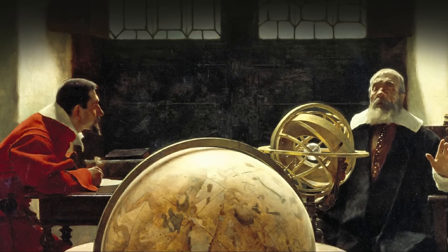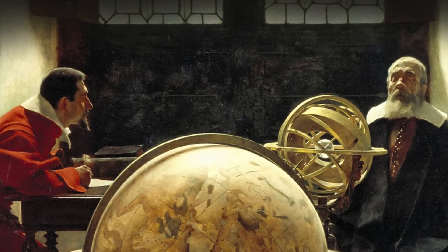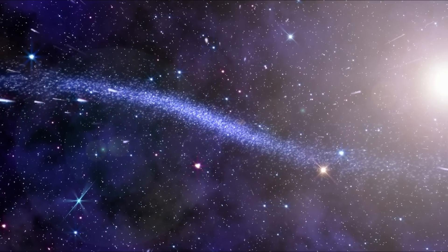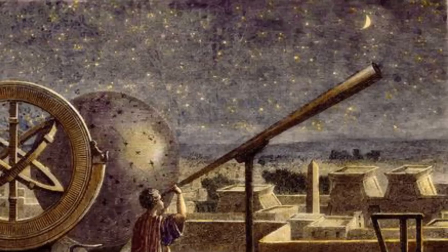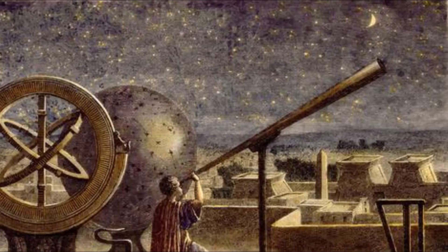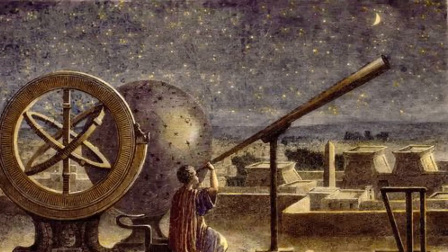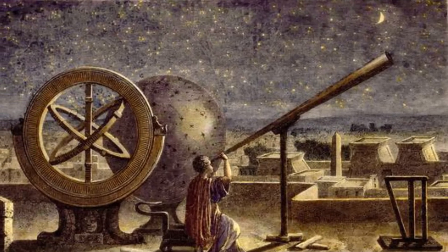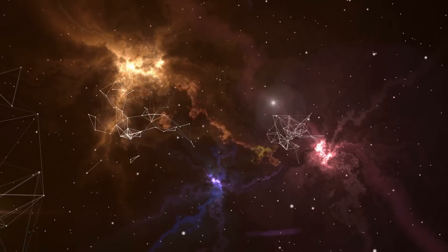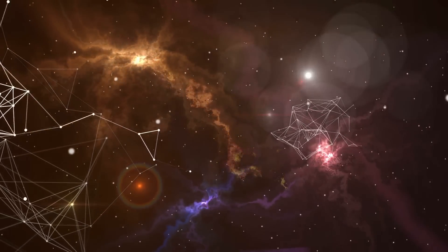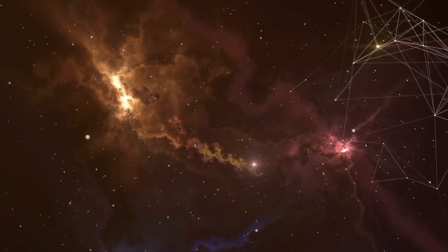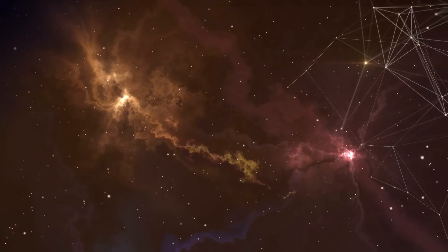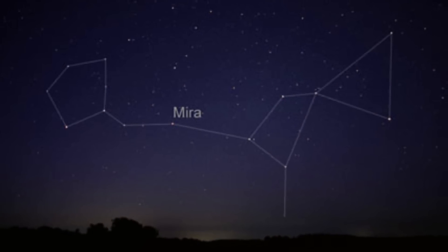Anyway, getting back to Mira, the reason that Fabricius was so fascinated by it was that it appeared to be a rather interesting bright star, with a magnitude of 3. But as he kept watching it, by the end of August, a mere two weeks or so after first discovery, he noticed that the intensity of the star had actually grown to magnitude 2, which made it not just a very bright star, but one that was the brightest in the constellation it was in.